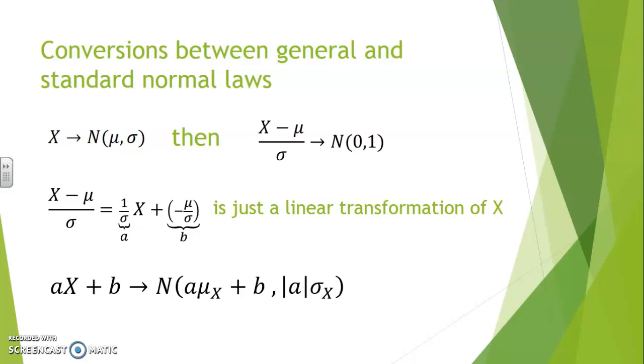Our property, a times mu X plus b, to represent the new variable's expected value, and absolute value of a times sigma X, simplify quite a bit when we consider the fact a is 1 over sigma, and b is minus mu over sigma.